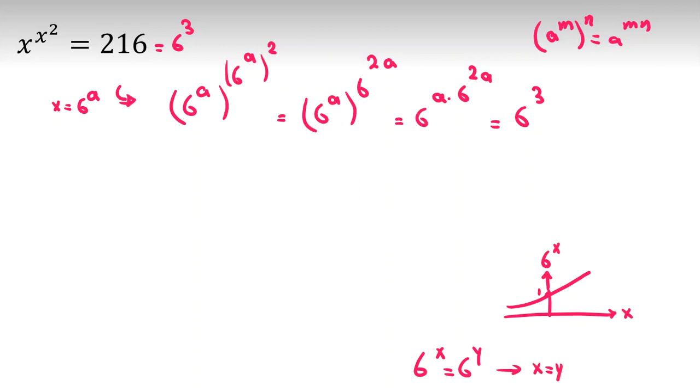So in this problem also, we conclude 6 to this part equals 6 to this part. The powers are equal. So a times 6 to the 2a equals 3. Now you should find what a works. Pause the video here and try to see what a works.